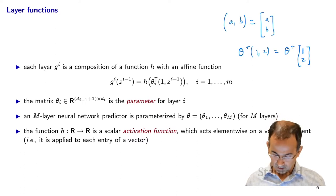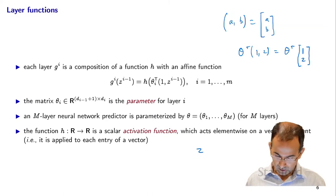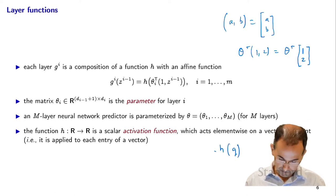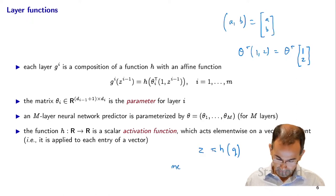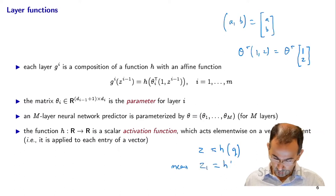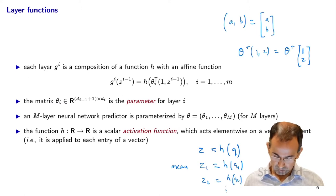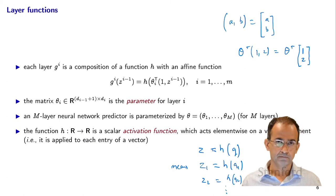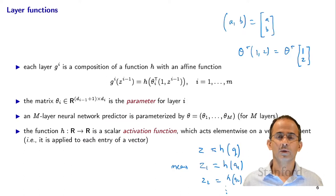Explicitly, if z1 equals h of q — using q as the argument — then z1 is h of q1, z2 is h of q2, and so on. When we have m layers in our neural network, we have m matrices Theta-1 through Theta-m, and those are the parameters we need to choose when training.